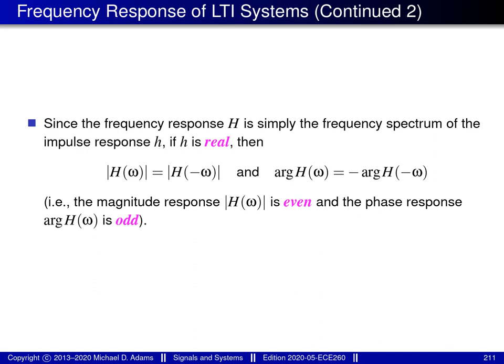In practice, the impulse response of an LTI system is often real valued. If little h is real, then big H must be conjugate symmetric. The condition of conjugate symmetry is equivalent to two conditions: the magnitude response of the system is even, and the phase response of the system is odd.